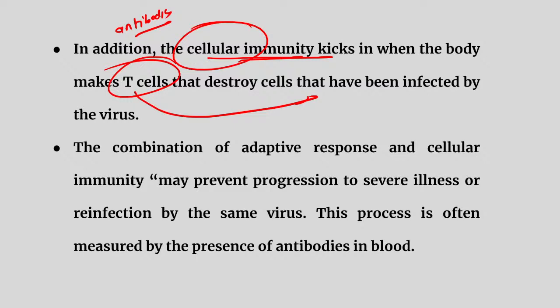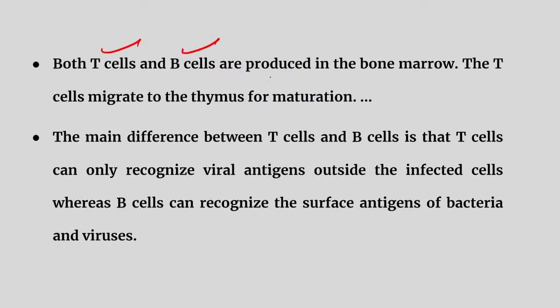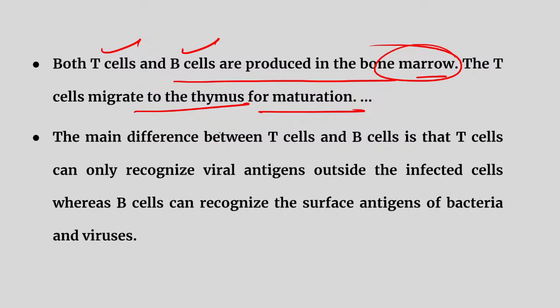Adaptive response includes cellular immunity as well. The body produces T cells, which also destroy viruses and bacteria. So on one side is adaptive response with antibodies, and on the other side is cellular immunity where thymus-generated T cells kill viruses. Our body's immunity works in different layers to protect us.